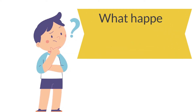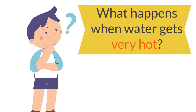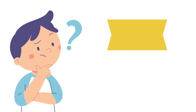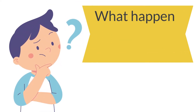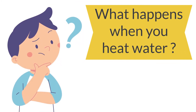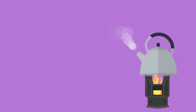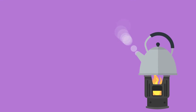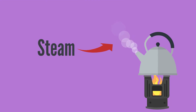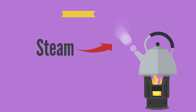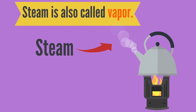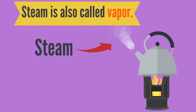What happens when water gets very hot? What happens when you heat water? Any guesses, anyone? When you heat water, it becomes boiling, and that water produces or makes steam. That is another form of water. Steam is also called vapor.